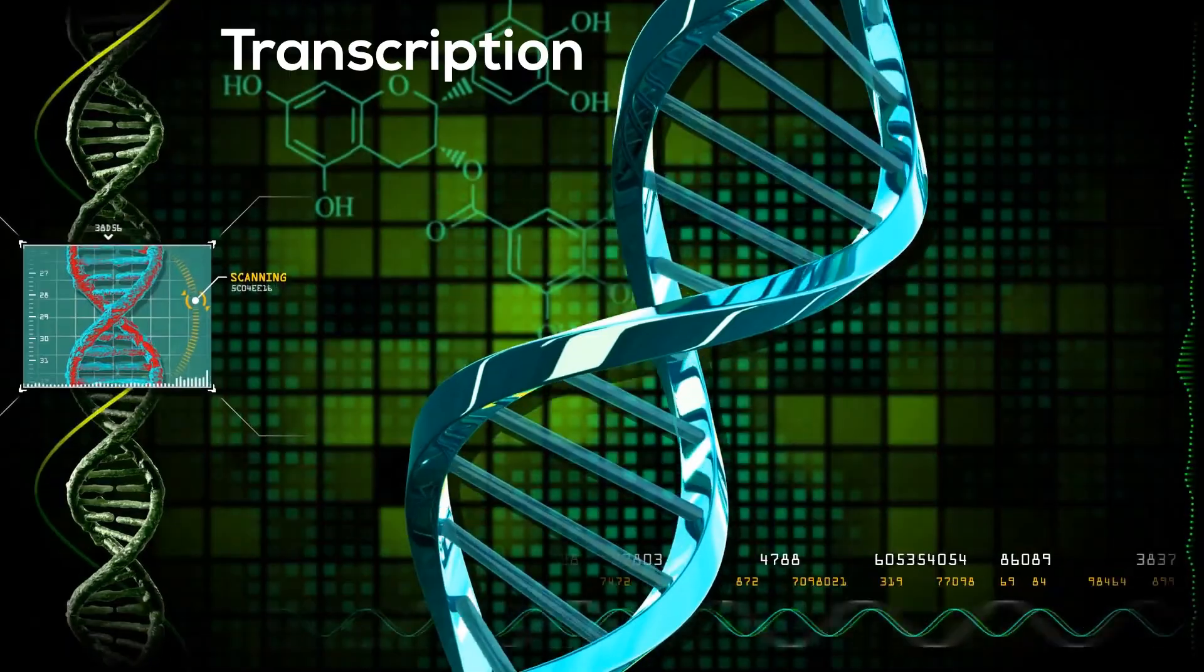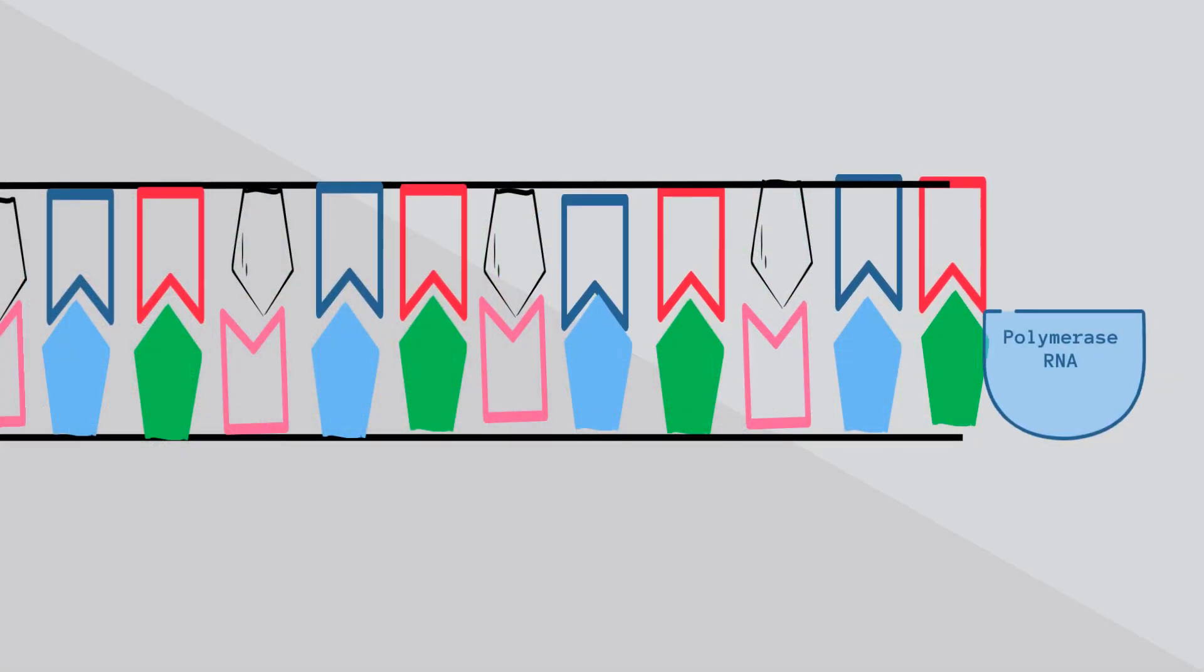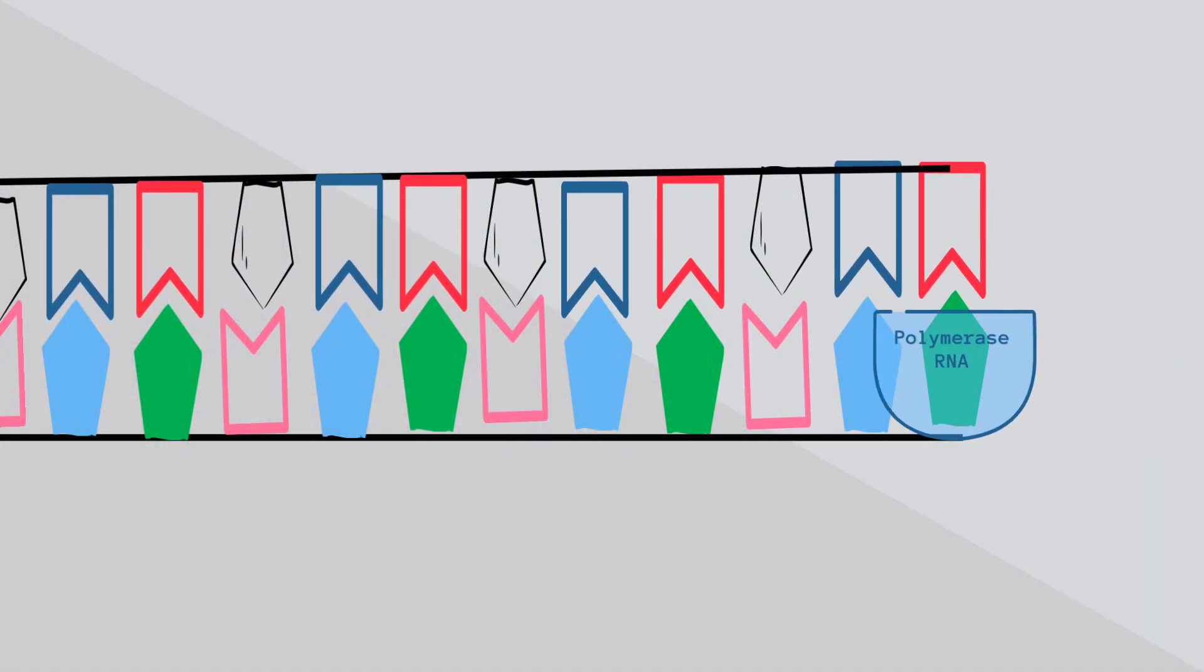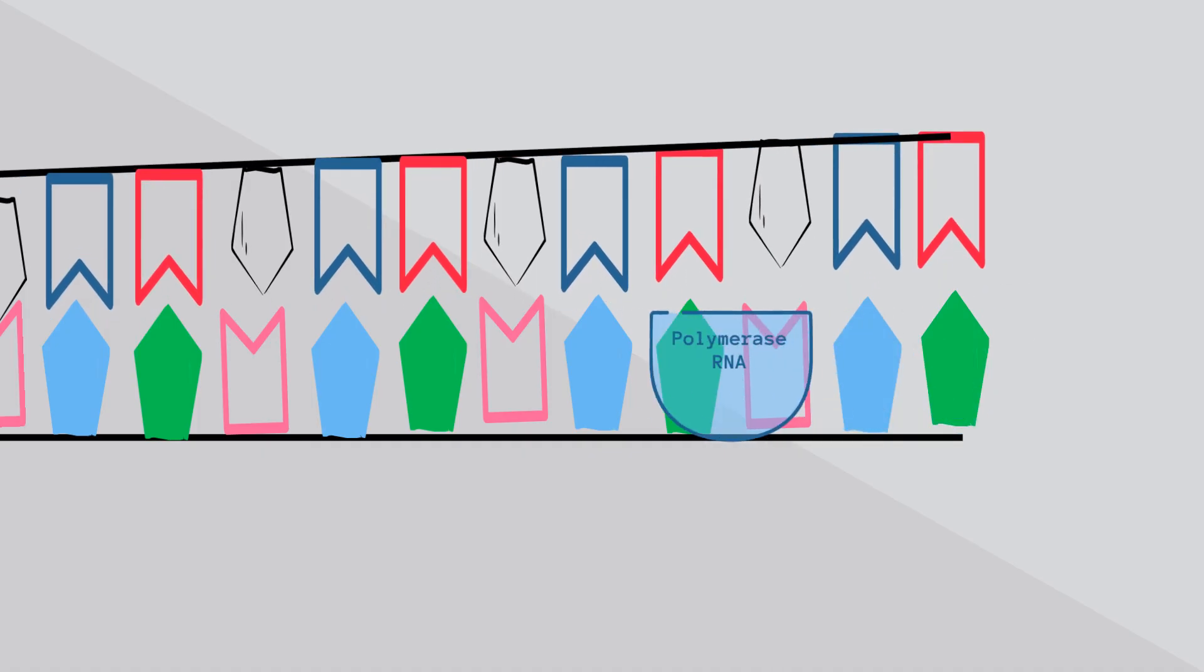When a gene is switched on, RNA polymerase attaches to DNA and causes it to unzip. This is called the initiation stage.